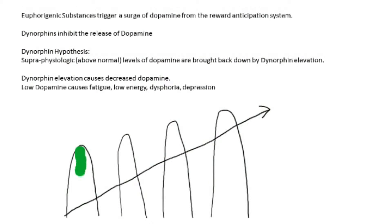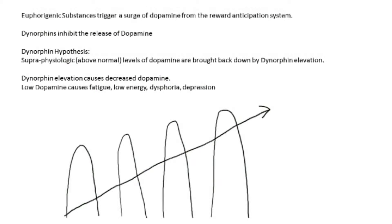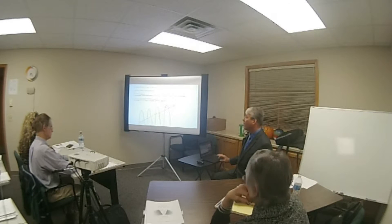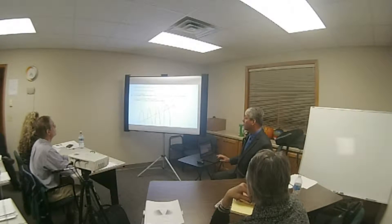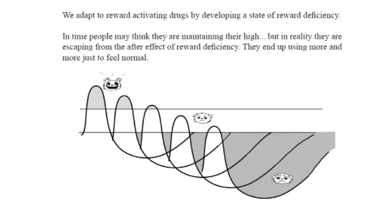So the buzz is up here, and as the dynorphins go up and up, after a while they're getting very little buzz, very little euphoric effect. This dynorphin hypothesis is the new information: that above-normal levels of dopamine are brought back down by dynorphin elevation.